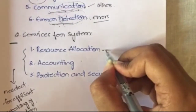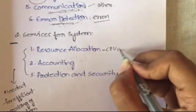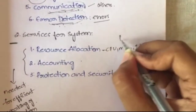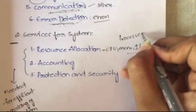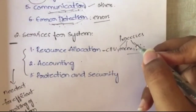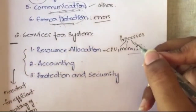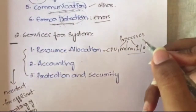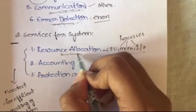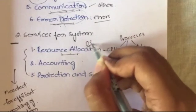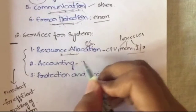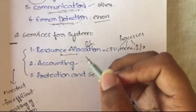The first system service is resource allocation. Resources like CPU, memory, and IO devices need to be allocated to the many processes running on the system. Each process needs some resources according to its requirements, so resources should be allocated in such a way that no process waits too long. Efficient resource allocation is handled by the operating system.